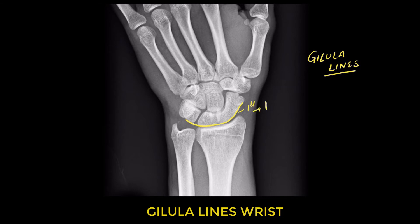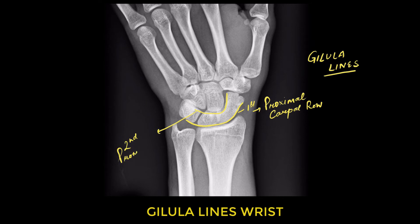The first arc is a smooth curve outlining the proximal convexity of the scaphoid, lunate, and triquetral — that's your first arc. The second Gilula line is basically towards the distal end of these proximal row bones, so it outlines the distal-most part of the proximal carpal bones, just before the second row of carpal bones begins.